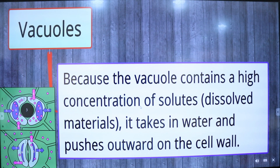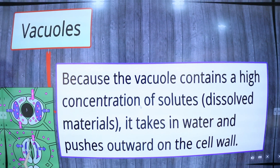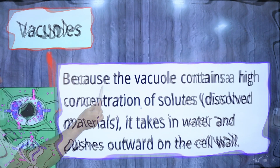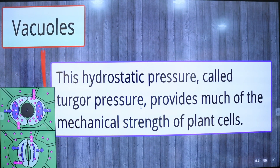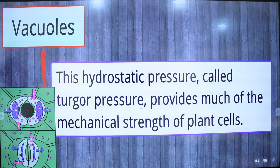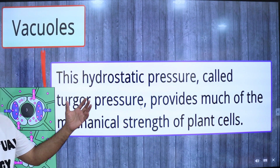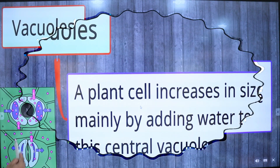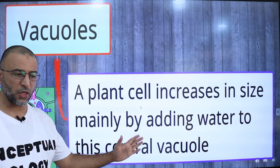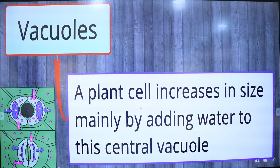Stoma is singular; stomata is plural. When the guard cells are flaccid, the stoma is closed. When vacuoles take in more water, that results in hydrostatic pressure, known as turgor pressure. Turgor pressure provides much of the mechanical strength in plant cells. A plant cell increases in size mainly by adding water to its central vacuole.